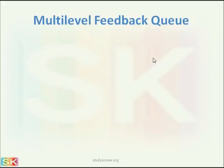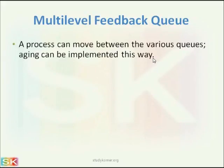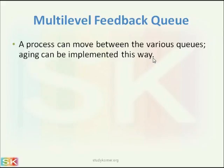In multi-level feedback queue, the process can move between the various queues. Aging can be implemented this way. Aging is the solution to the starvation problem. As time goes, we increase the priority of a process which is waiting for a very long duration, so that this process never goes to a starvation state. This is called multi-level feedback queue.